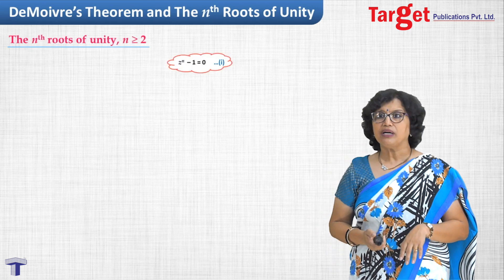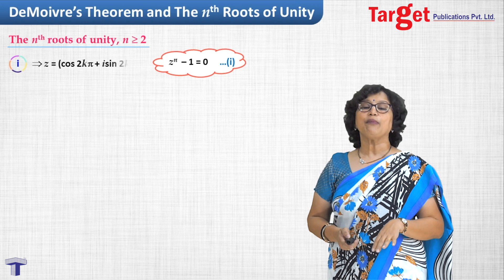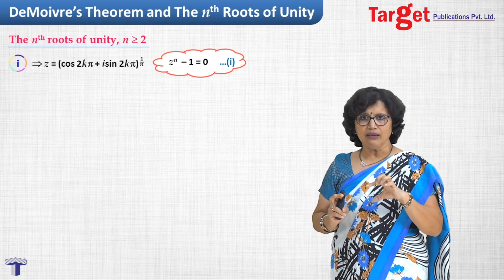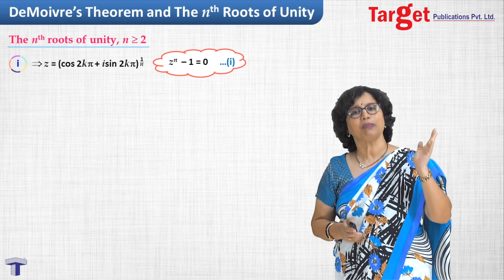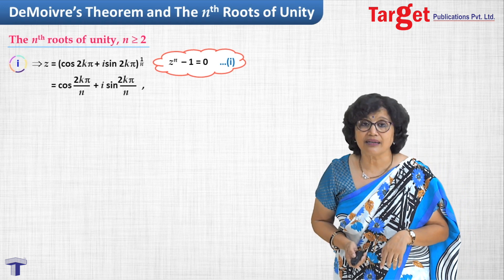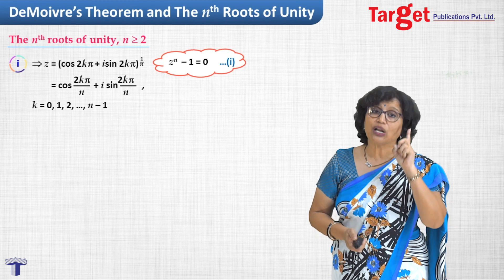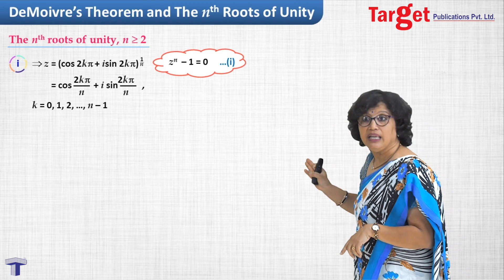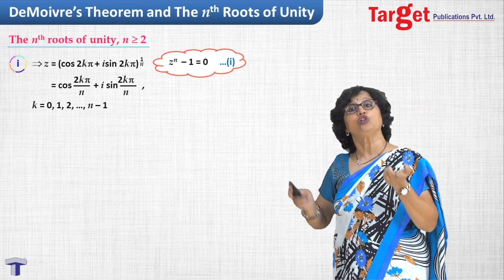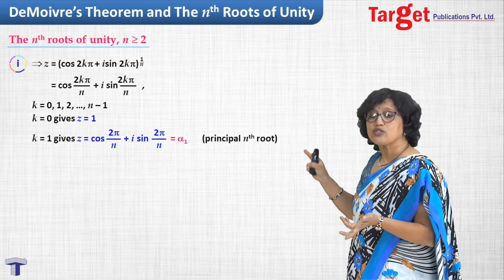Now let us actually find the nth roots of unity by solving z^n - 1 = 0. Write z^n = 1, then z = 1^(1/n). We need to write 1 in polar form: 1 = cos(2k*pi) + i*sin(2k*pi). So z = (cos(2k*pi) + i*sin(2k*pi))^(1/n). Using De Moivre's theorem, z = cos(2k*pi/n) + i*sin(2k*pi/n), where k is an integer taking values 0, 1, 2, ..., n-1, giving n distinct values.